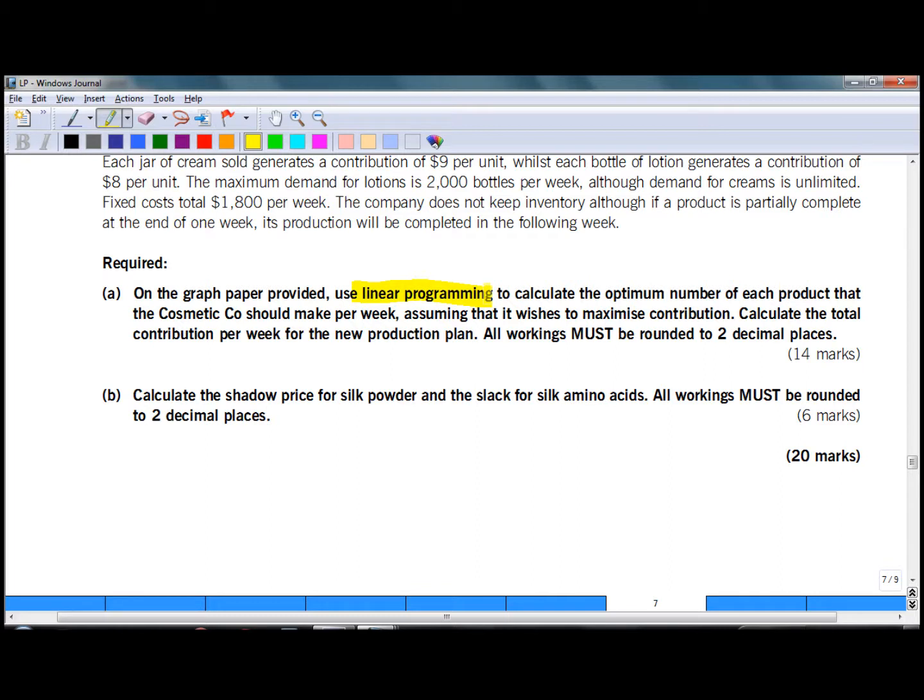Assuming that it wishes to maximize contribution. We are given the objective function here. We need to maximize contribution. Calculate the total contribution per week for the new production plan. So there are two requirements: calculate total contribution and optimum number of each product. All workings must be rounded to two decimal places. In part B, calculate the shadow price and slack. All workings must be rounded to two decimal places.